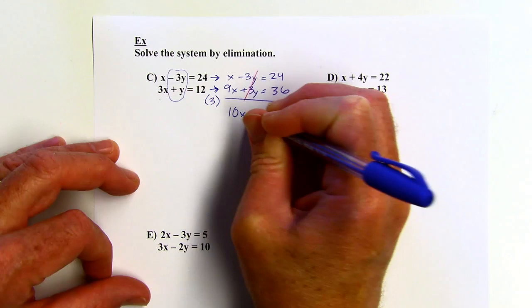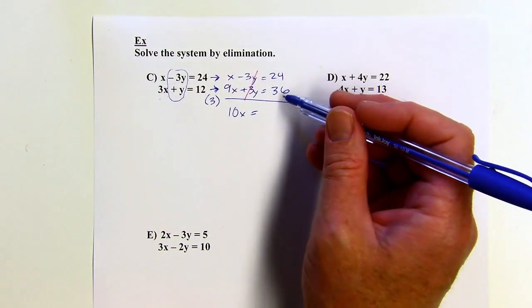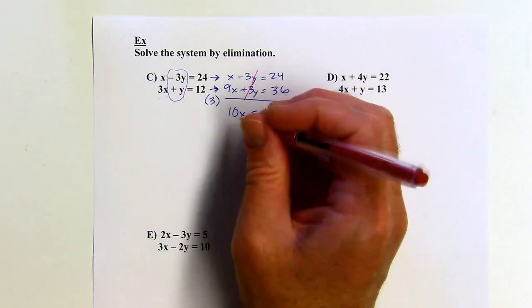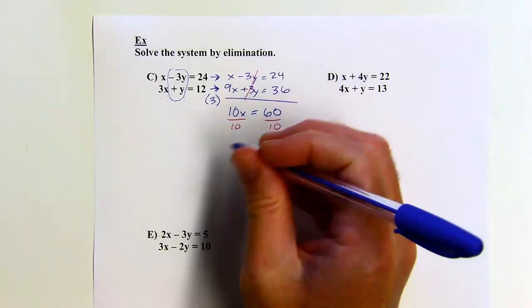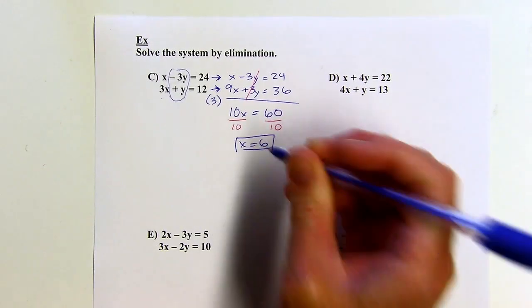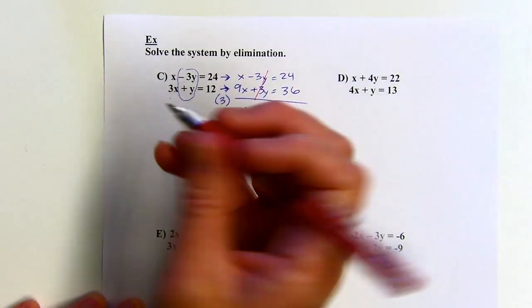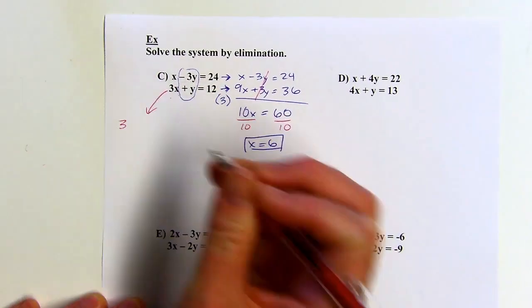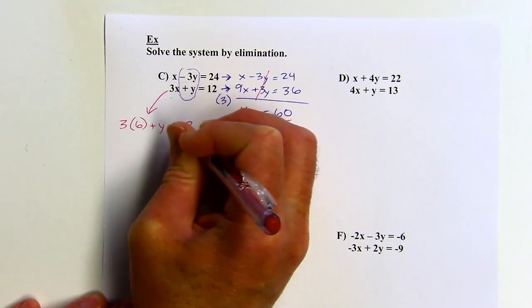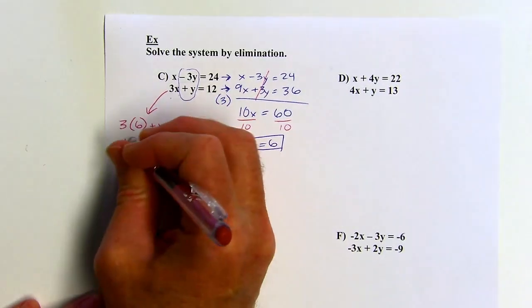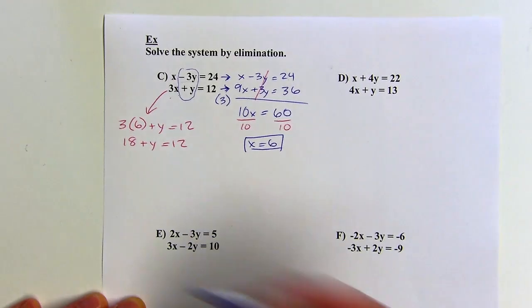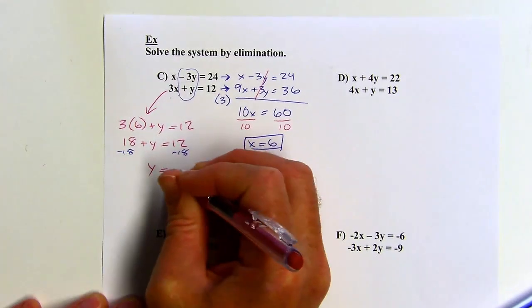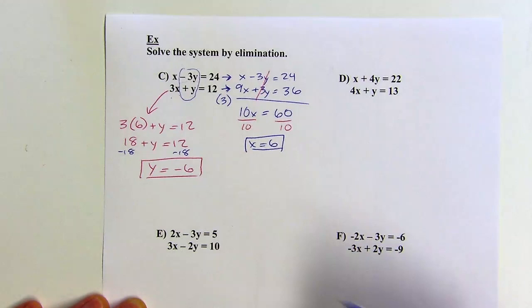Adding the equations: 1x plus 9x is 10x, and 24 plus 34 is 60. Dividing both sides by 10, x equals 6. Don't forget to go back and find y — I'll use the second original equation. So 3x plus y equals 12, and x was 6: 3 times 6 is 18. Subtracting 18 from both sides, y equals negative 6.